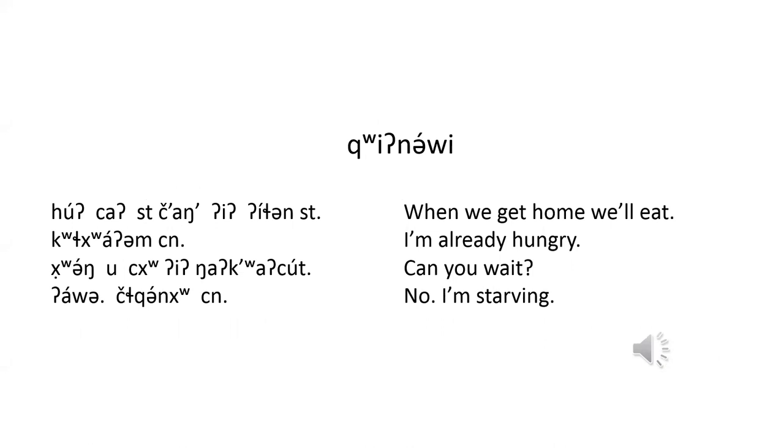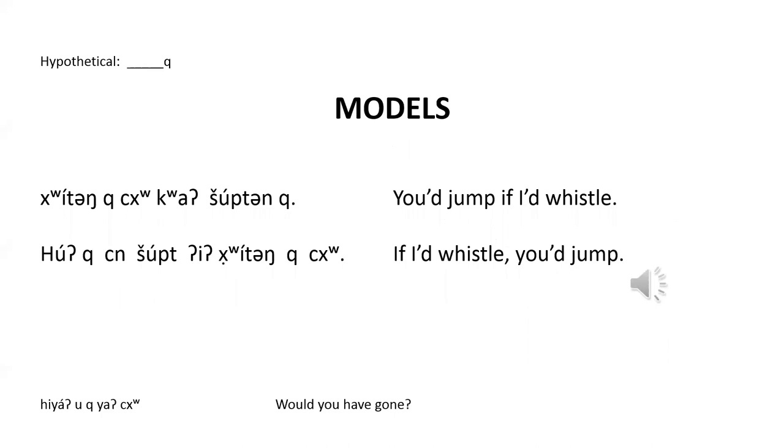And our last lesson on conditional clauses: hypothetical. Consider the difference between these two English sentences. 'If I whistle, you jump,' or 'if I would whistle, you would jump.' These both express the main event—you jump—and a conditional event—I whistle. The difference is that the second sentence expresses the speaker's opinion about a hypothetical situation. In English, we use the auxiliary verb 'would.'